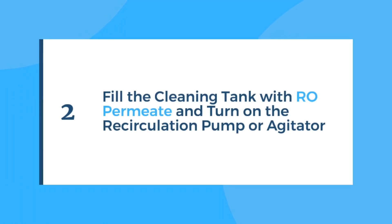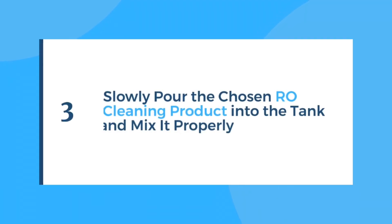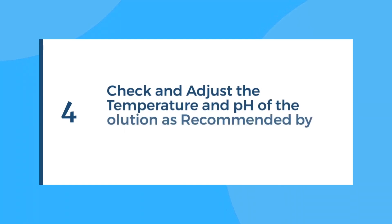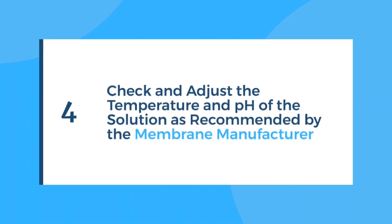Step 2: RO permeate should be used to fill the cleaning tank. Turn on the recirculation pump or agitator in the tank. Step 3: Slowly pour your chosen RO cleaning product into the cleaning tank based on the total volume of the CIP and the product strength required, and properly mix. Step 4: Check the temperature of the solution. If the temperature is below the specified level, adjust the heating control to get the desired temperature.